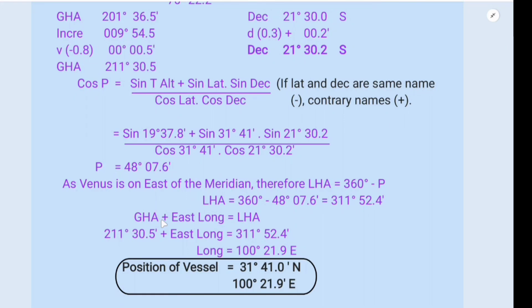We also know that GHA plus east longitude is equal to LHA. So GHA we have already calculated here, 211 degrees 30.5. So GHA 211 degrees 30.5 minutes plus east longitude is equal to LHA, that is LHA is equal to 311 degrees 52.4 minutes.